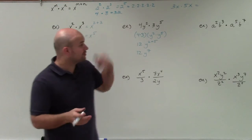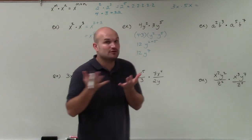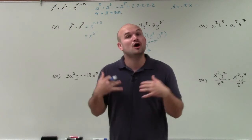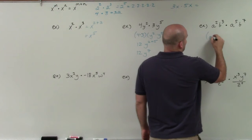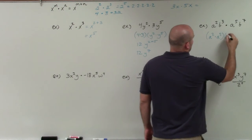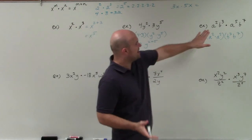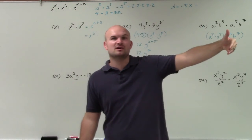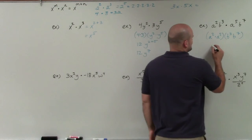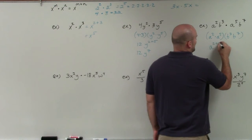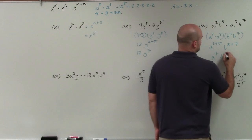Now let's work with multiple variables. What if I have an a and a b? The product rule only works when the bases are exactly the same, so I'm going to group these: a squared times a to the fifth, and b cubed times b to the seventh. Order doesn't technically matter since these are all multiplied by each other — we can rearrange them and it won't change anything. So this is a to the 2 plus 5, and b to the 3 plus 7, giving a final result of a to the seventh times b to the tenth.